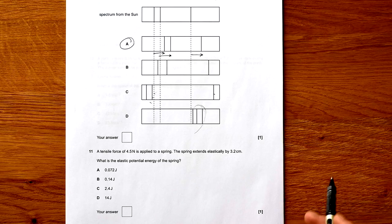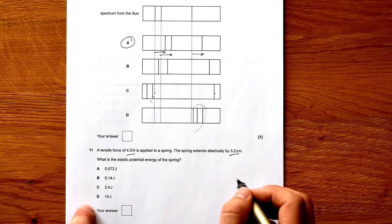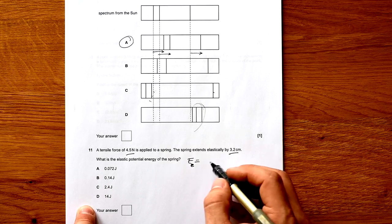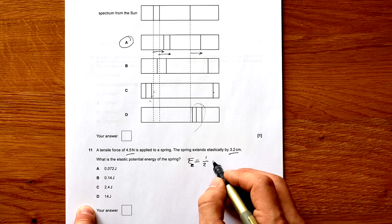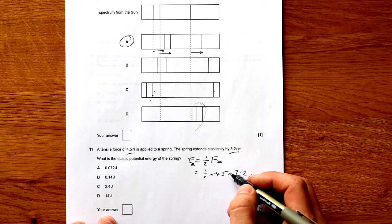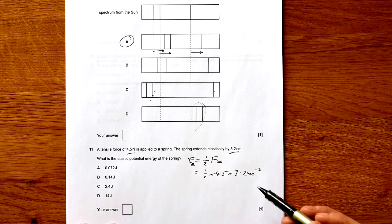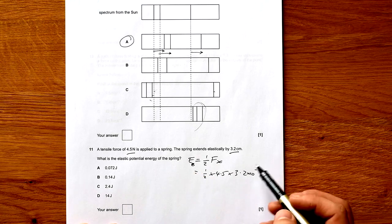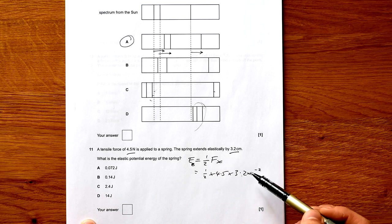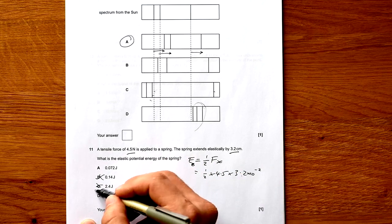Question 11: Tensile force of 4.5 newtons is applied. Spring extends elastically by 3.2 centimeters. What is the elastic potential energy? We know that elastic potential energy equals half F X, half times the force times the extension. Half times 4.5 times 3.2 times 10 to the minus 2. We can see all the numbers are different so we can probably just do this without calculating it. So we have a half times 4.5, that's like 2.25, times 3.2. It's going to give us a number between six and eight. So it can't be any of these three. It has to be A.